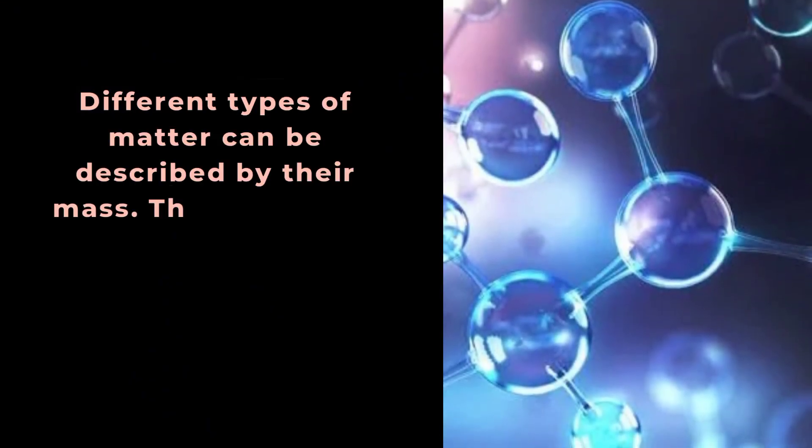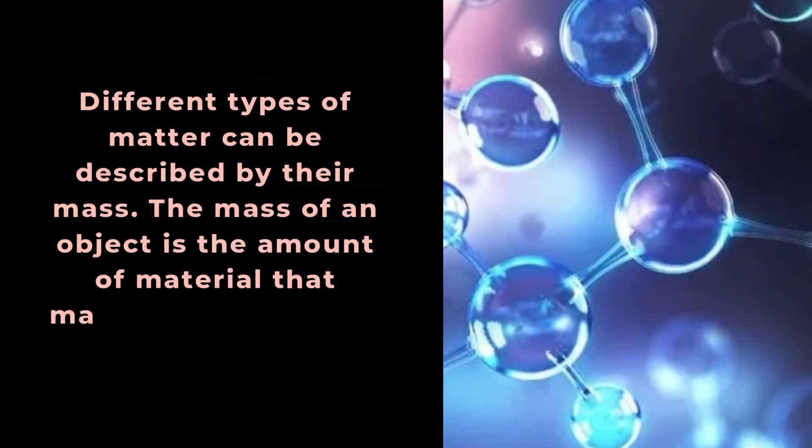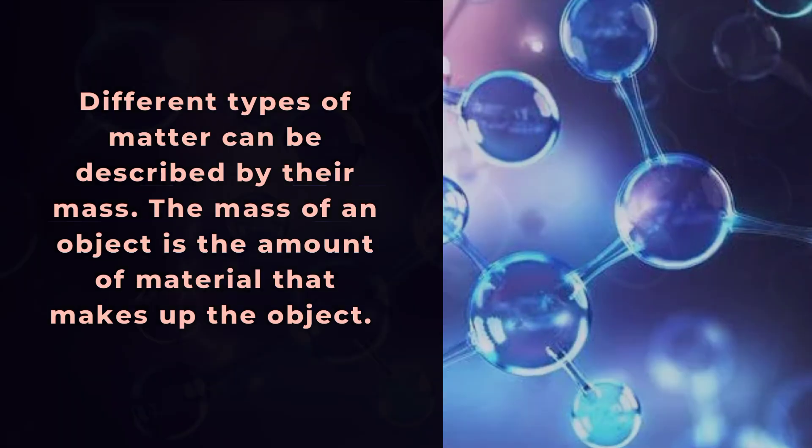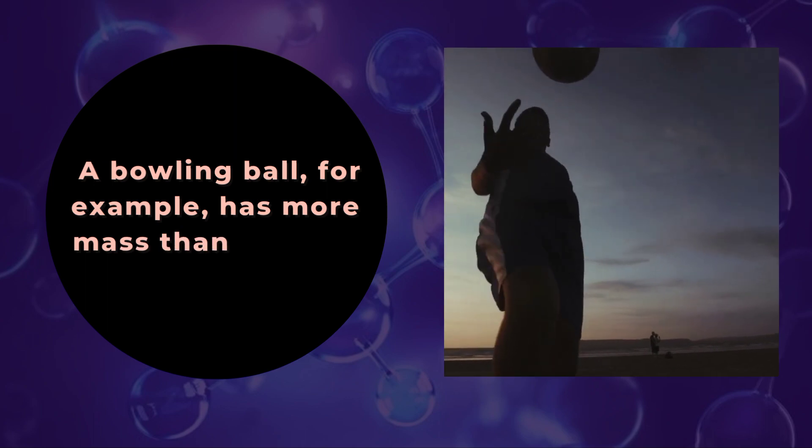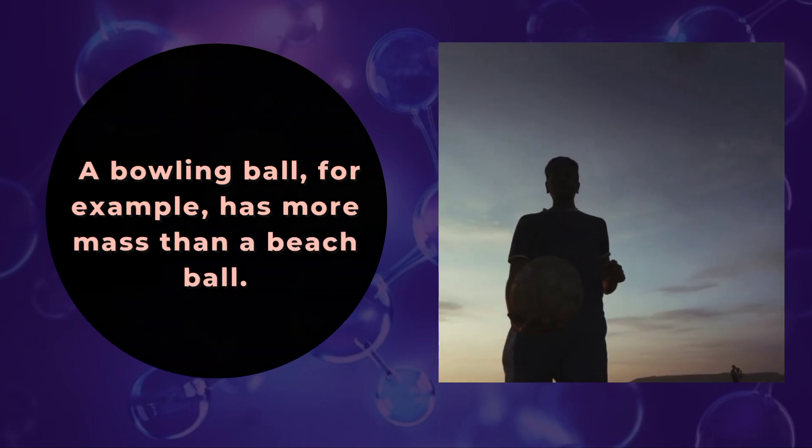Different types of matter can be described by their mass. The mass of an object is the amount of material that makes up the object. A bowling ball, for example, has more mass than a beach ball.